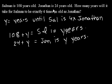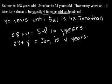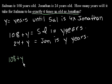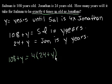And what else does the problem say? It says in how many years will it take for Salman to be exactly — let me put that in another color for emphasis — exactly four times as old as Jonathan. The 'exactly' is important, because Salman is already more than four times as old as Jonathan, but we want to figure out exactly when Salman is going to be four times as old as Jonathan. In y years, Salman is going to be 108 plus y, and he's going to be exactly four times as old as Jonathan, who will be 24 plus y years old.